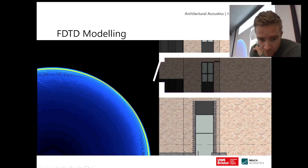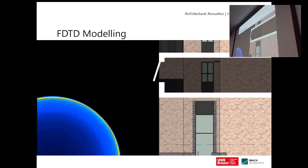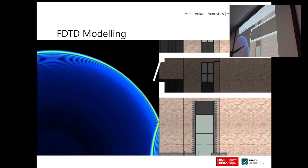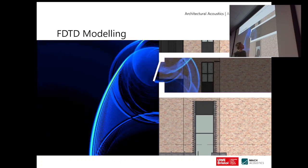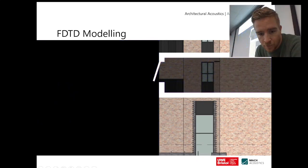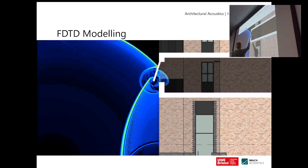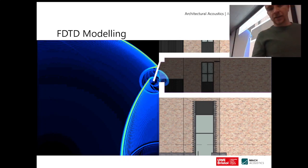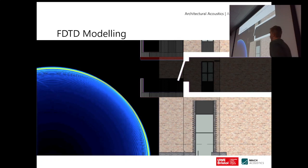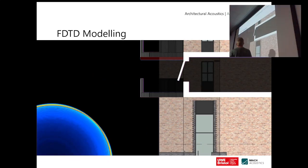This FDTD modeling is from a different project but shows one of the better examples. It allows us to visualize what's happening with sound and models diffraction - where sound bends around corners. As sound comes through a gap you can see it bending around the corner, with the direct sound wave strong and the diffracted waves much lower energy. The more convoluted and difficult we can make it for sound to get into a building, the better. This example shows an apartment with a balcony, used as an acoustic tool - you can see the diffraction over the balcony and the energy reduction by the time the sound reaches the interior.